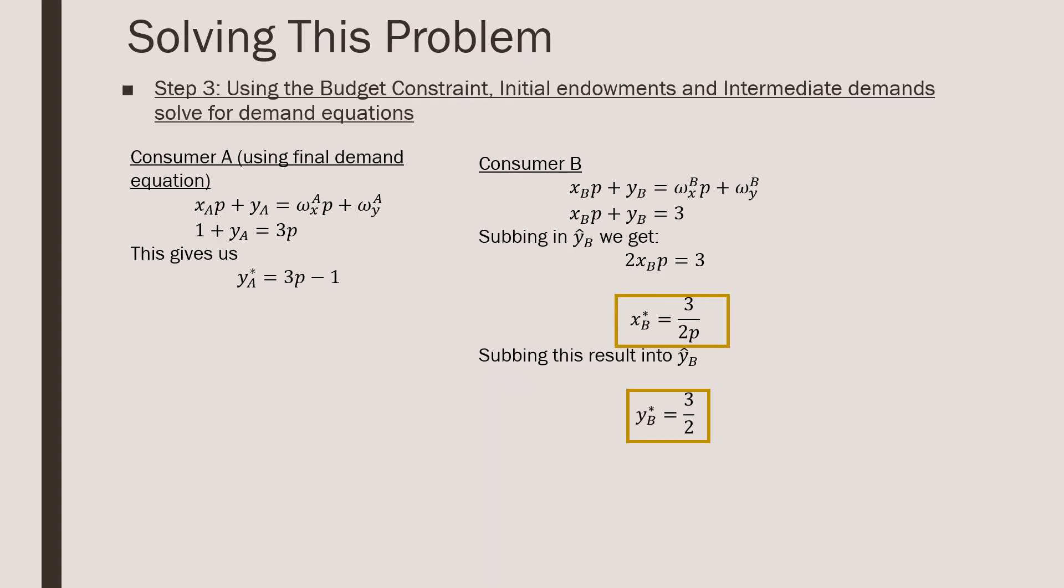Step number three is that using the budget constraint and initial endowments and intermediate demands, we're going to solve for the demand equations. So for consumer A, it's pretty simple. We just go and plug in the values. So for x_A, we're going to put in one over P. And we have a P already there. So that's just going to knock out each other. So we just have one plus y_A is equal to 3P, three coming from our initial endowment. This gives our demand equation for y_A as being equal to 3P minus one.